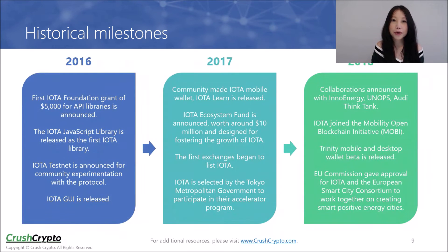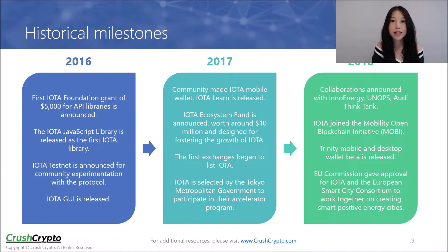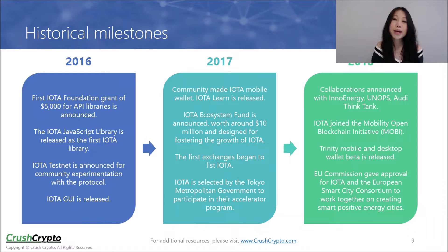This slide summarizes some of IOTA's historical milestones since 2016. So far, the project has announced several notable collaborations already, including partnerships with the International Transportation Innovation Center, InnoEnergy, the United Nations, and Audi Think Tank. In July of this year, the EU Commission gave approval for IOTA and the European Smart City Consortium to work together on creating smart positive energy cities. Last month, Fujitsu named IOTA as a new protocol standard for its IT equipment manufacturing service.